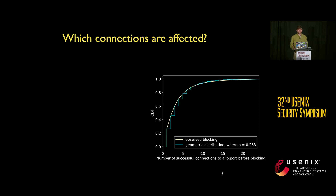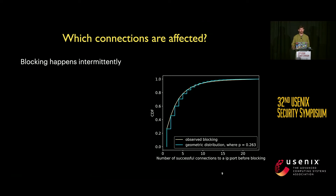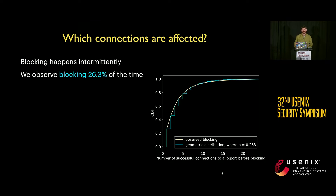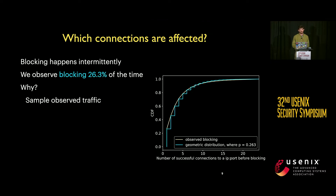We also observed that blocking wasn't occurring on every single connection — it appeared intermittent, as if some mistake had been made. However, when we used a payload we knew would get blocked and sent it repeatedly across multiple connections, we observed a consistent pattern of blocking approximately 26% of the time. We propose two explanations: first, the censor may be sampling only about 25% of observed connections to reduce computational load; second, this behavior may be intended to reduce false positives.